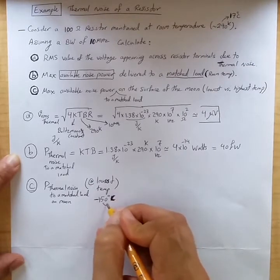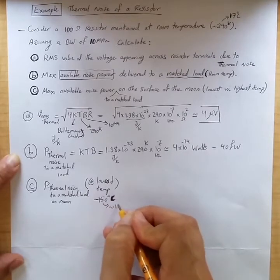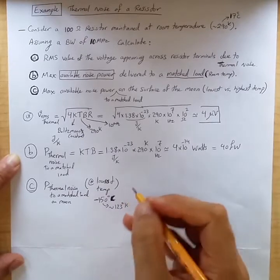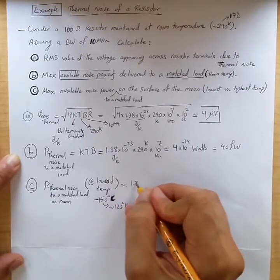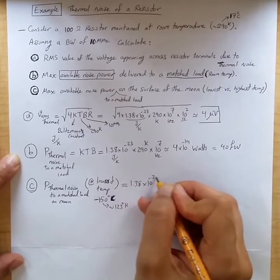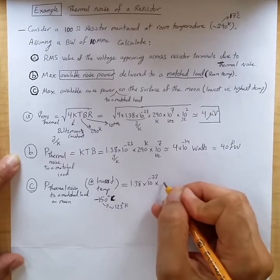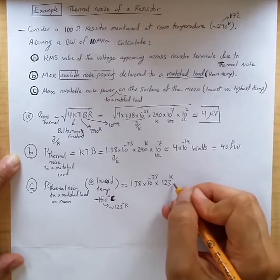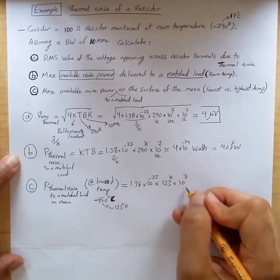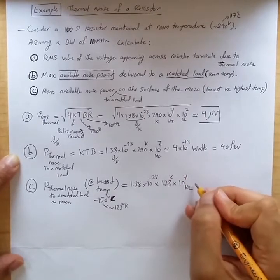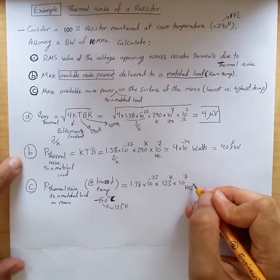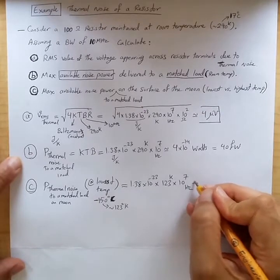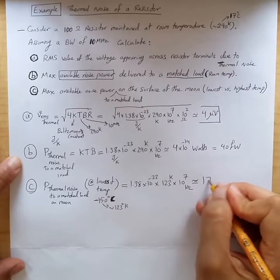Which corresponds to roughly 123 degrees Kelvin. So it is 1.38 times 10 to the minus 23 times 123 degrees Kelvin times 10 to the 7 hertz, that's the given bandwidth. This is roughly 17 femtowatts.